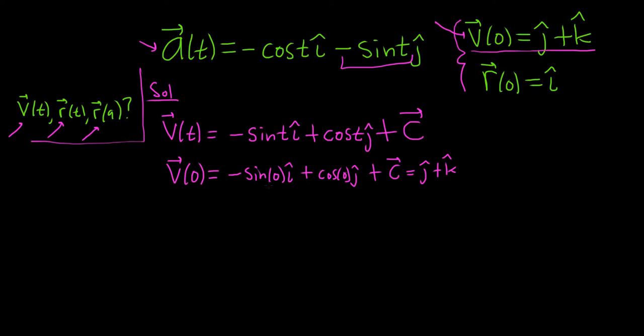All right, so now we just have to keep going. So sine of 0 is 0, cosine of 0 is 1. So we get 0 i hat, plus j hat, plus c, equals j hat, plus k hat. So we just subtract the j hat. This goes away because it's 0. So we're left with c equals k hat.